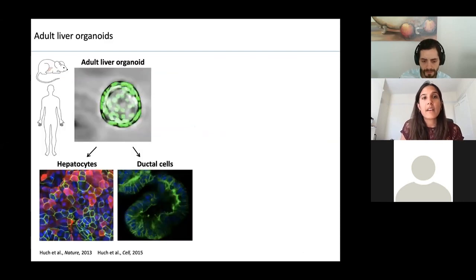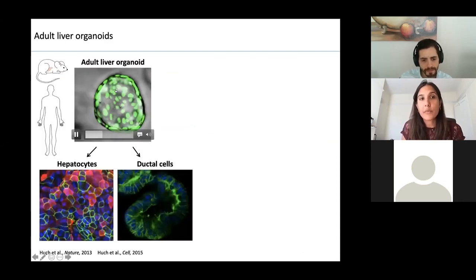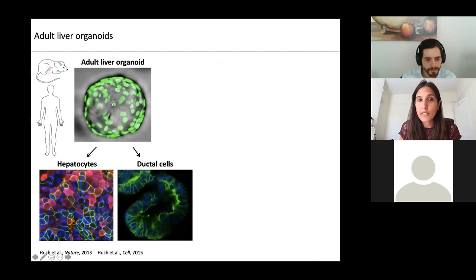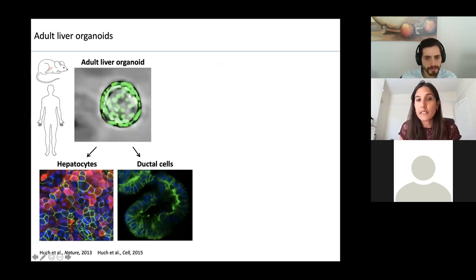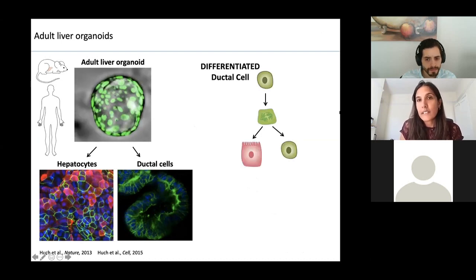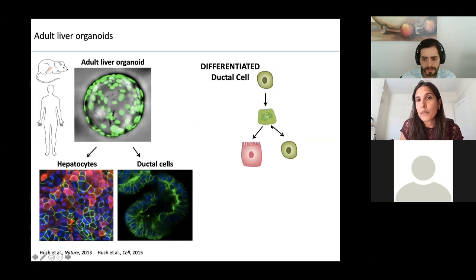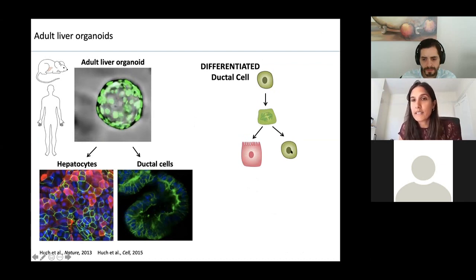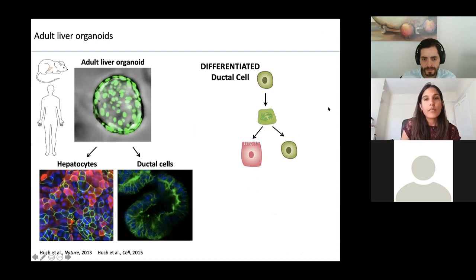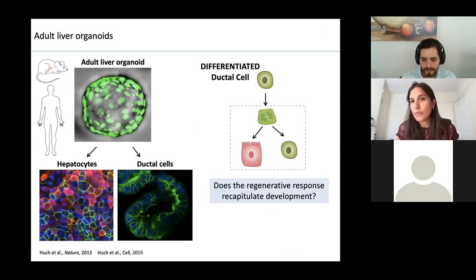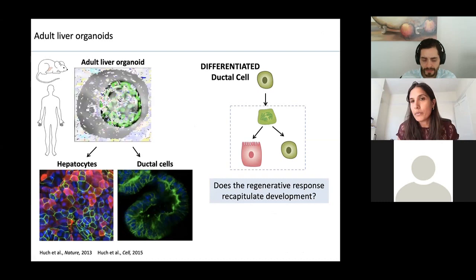So we have adult liver organoids which can be derived from both mouse and human, that can produce ductal cells which can then be differentiated into hepatocytes — a differentiated ductal cell becomes a bipotent progenitor giving rise to both hepatocytes and ductal cells. My question was: is this simply a regenerative phenomenon, or is it actually recapitulating something that happens earlier on in liver development?